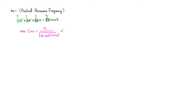Plugging in: F₀ is 82, so we have 82 on top, over the square root of — k is 26, so we have 26 minus, m is 1 so it's just ω², that quantity squared, plus c is 2 so that's 2ω, that quantity squared.